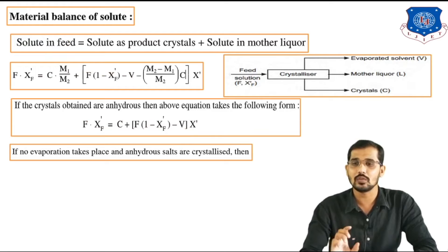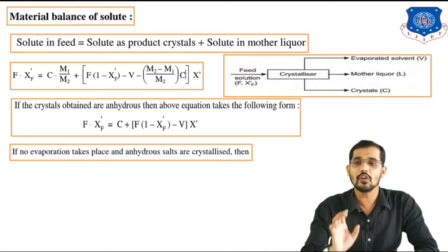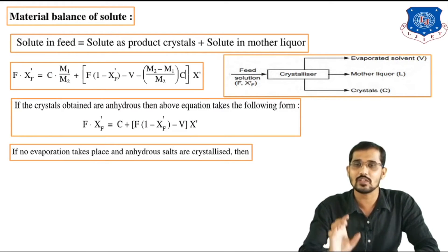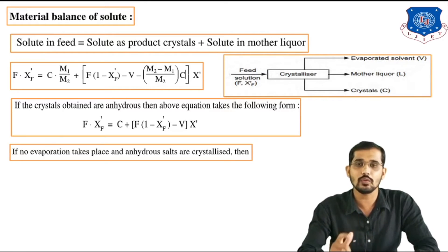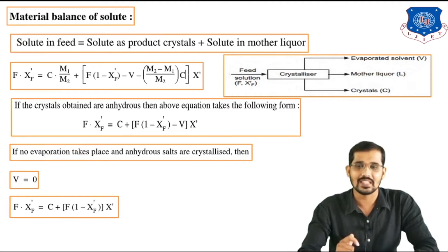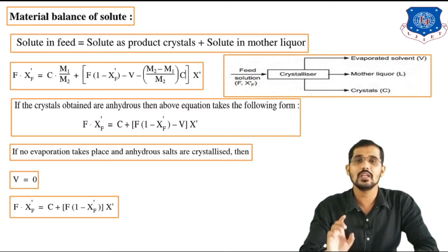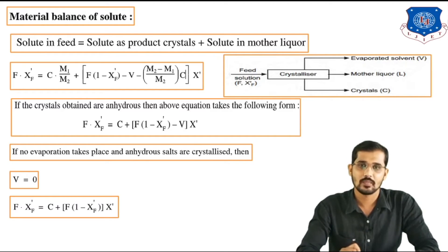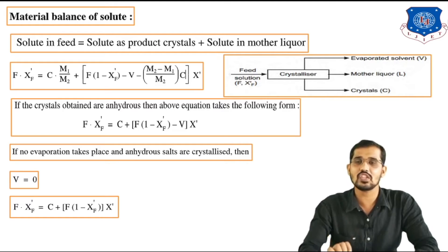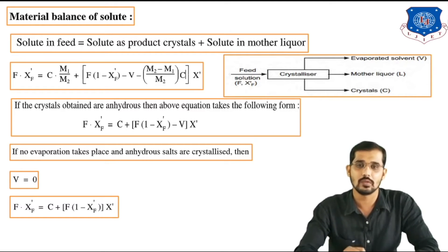If no evaporation takes place, then V = 0. Substituting V = 0 into the above equation gives: F × XF' = C + [F(1 − XF')] × X'. This is the final form of the material balance of the solute when there is no evaporation.